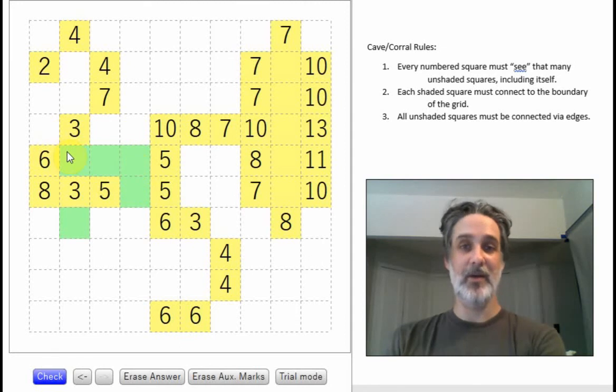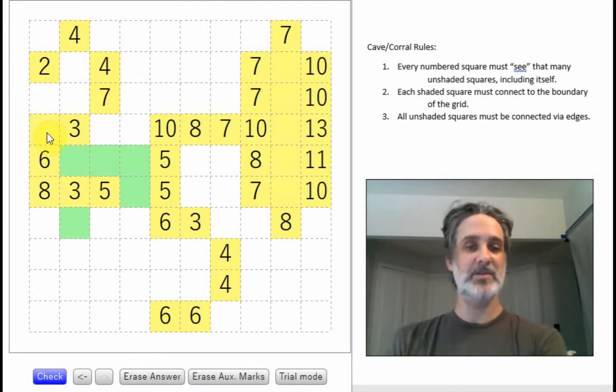Hey, look here, Battenberg, that's got to be unshaded for a similar reason. If it's shaded, then this has to connect to a boundary possibly down here, possibly up here, but in either case, this section will be completely separated from this section. So Battenberg gives us that. We could do a few other things here. This 2 cannot see that 4 because that would be 3 unshaded in a row. Then this has to escape to the boundary.